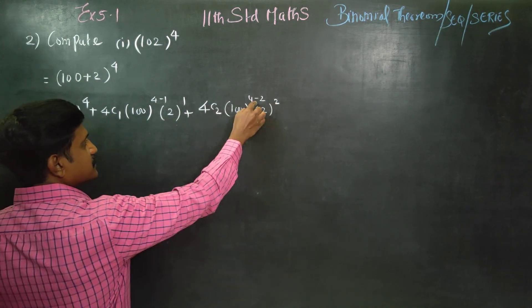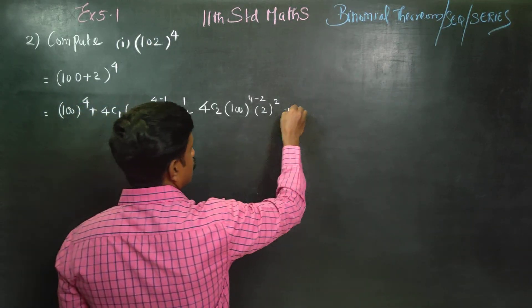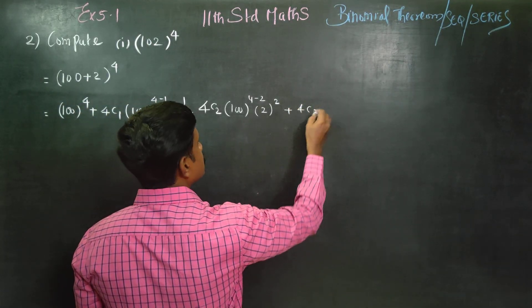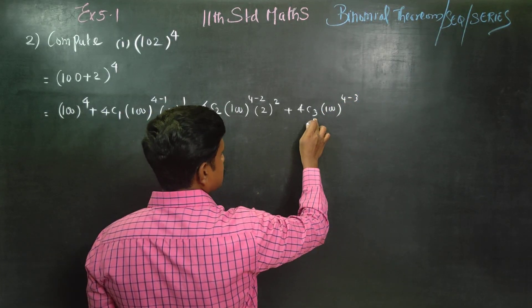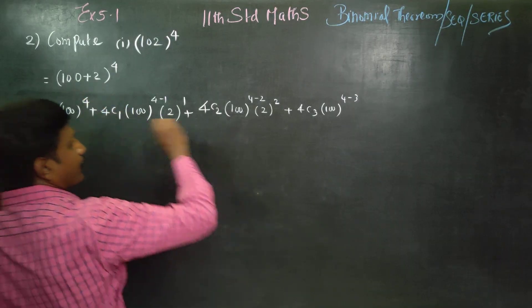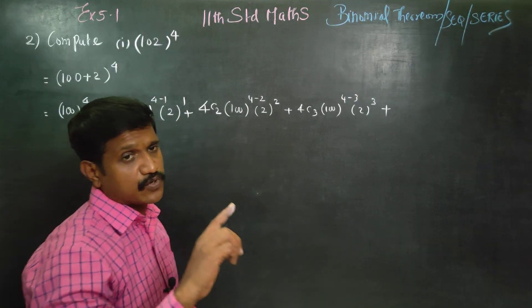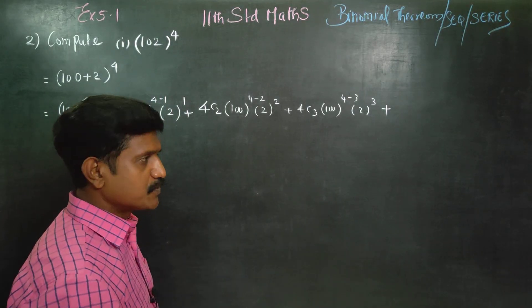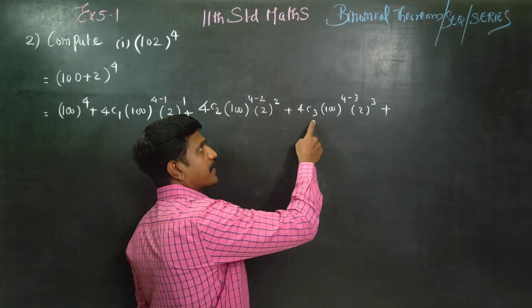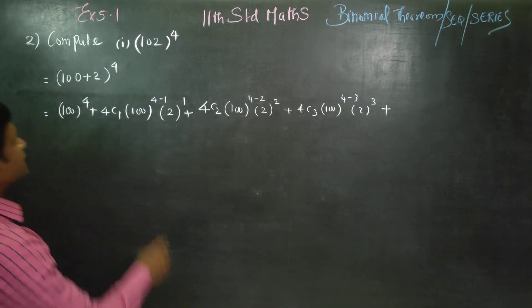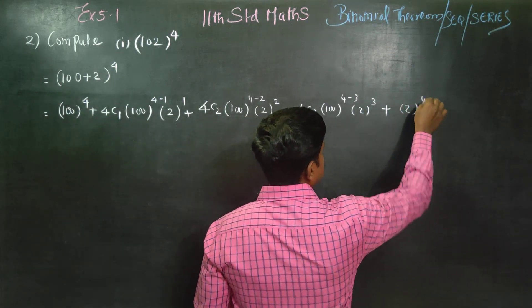Continuing the binomial expansion: + 4C3 × 100^(4-3) × 2^3 + 4C4 × 2^4. Note that 4C4 is equal to 1 for the last term.